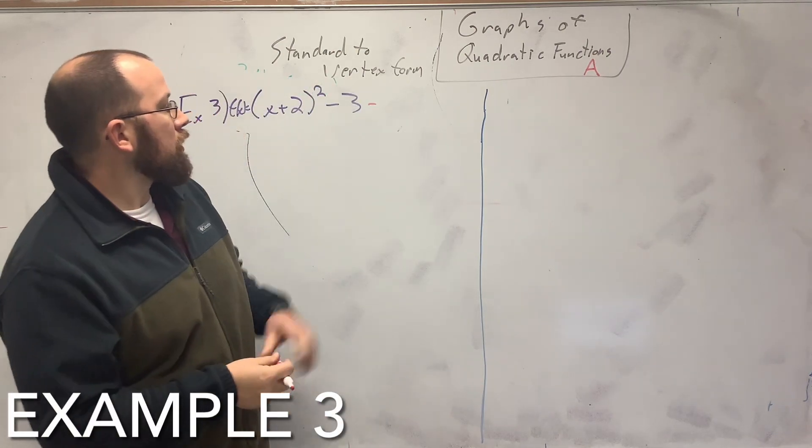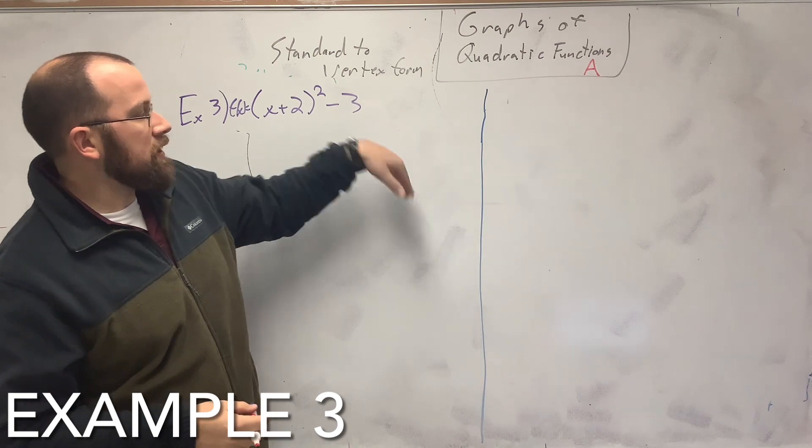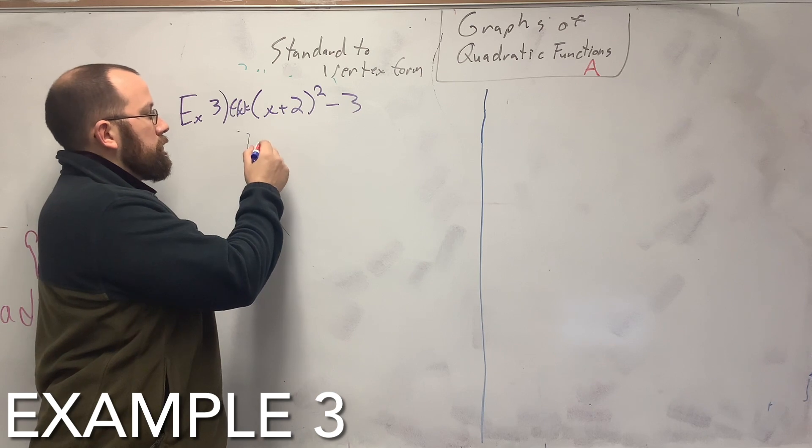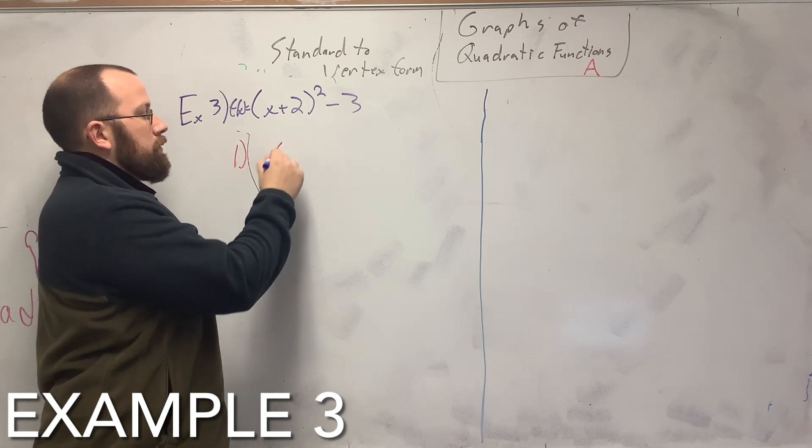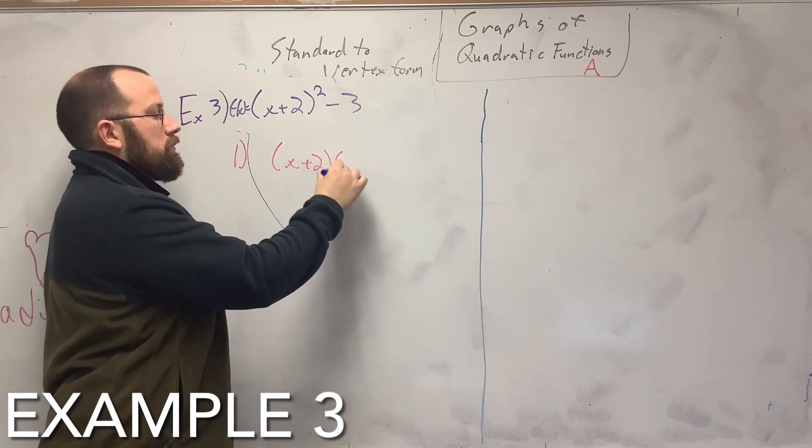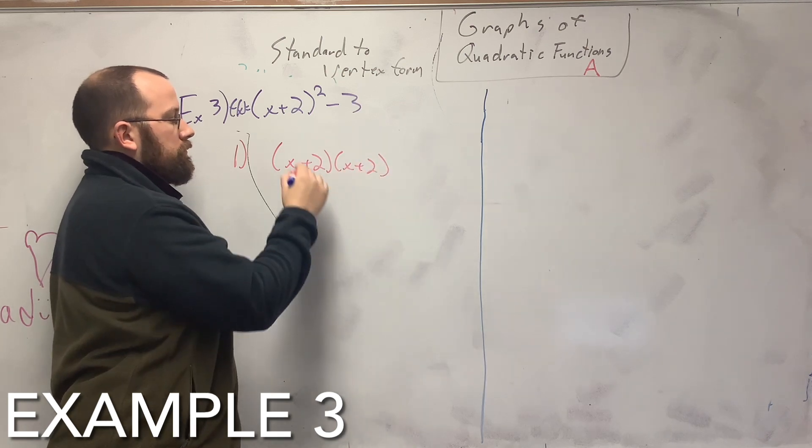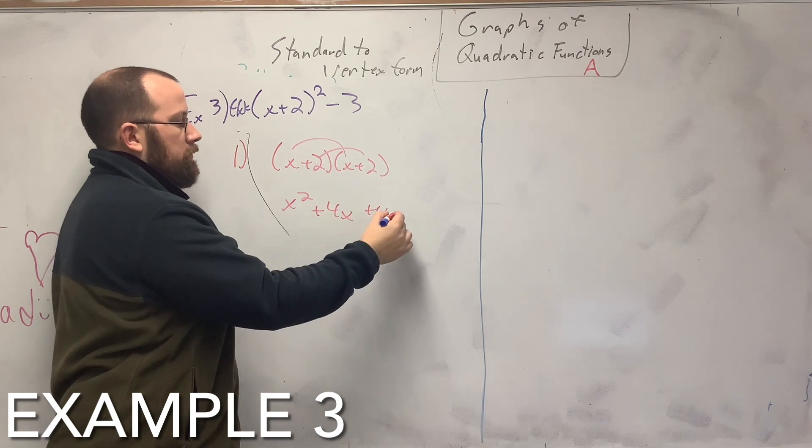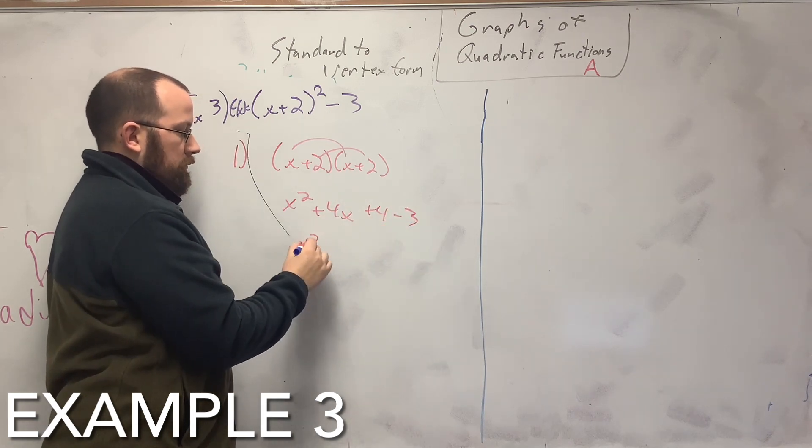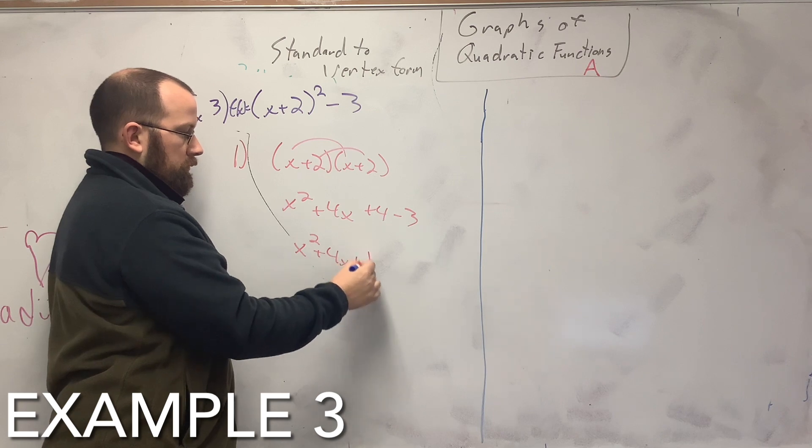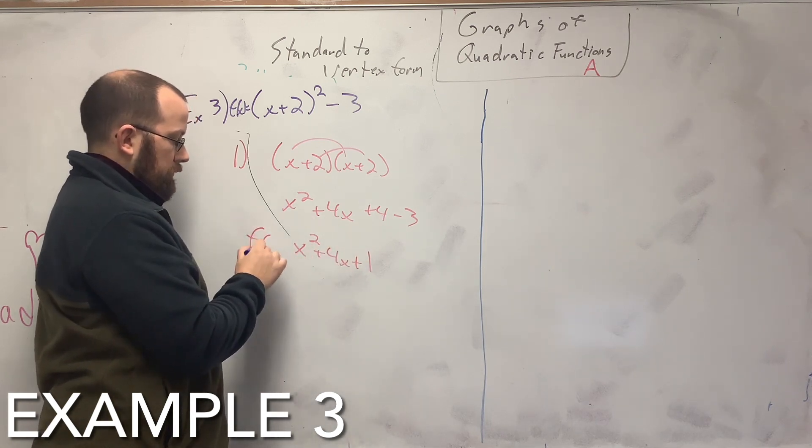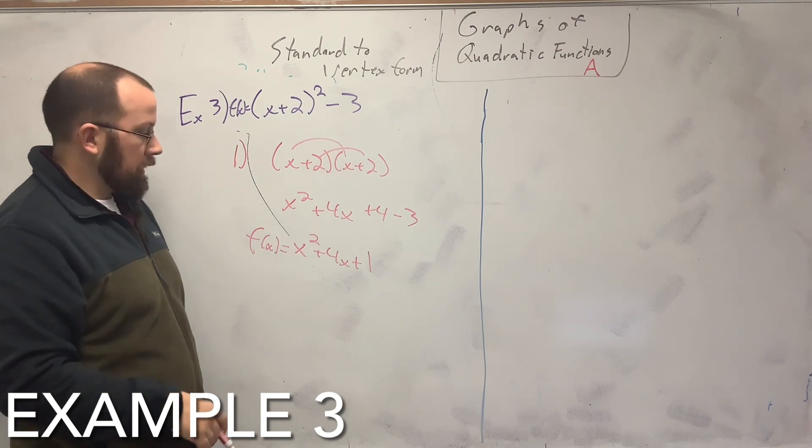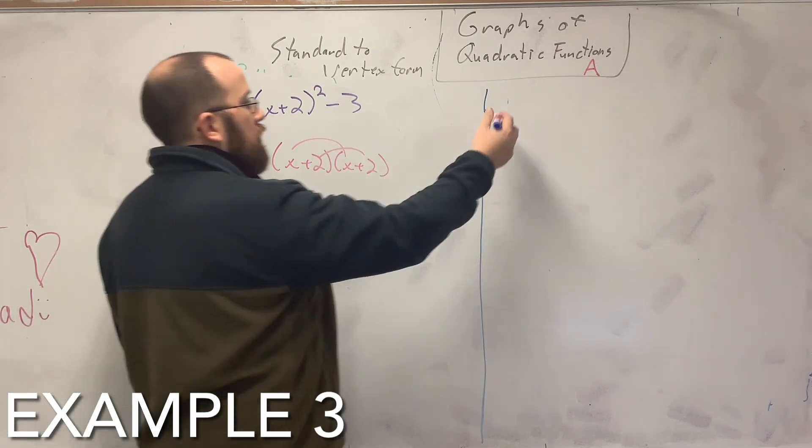Now we're going to start with the vertex, go to standard, and then standard to vertex. So first step, foil this out. So that's our standard form. Now we're going to take it from standard back to vertex.